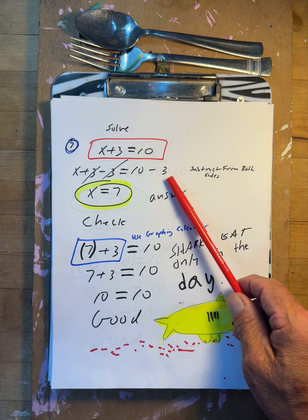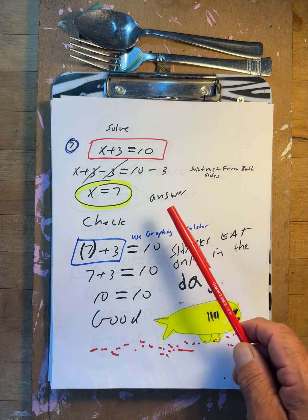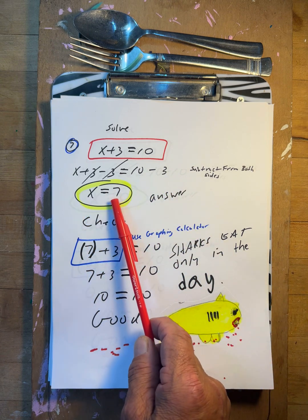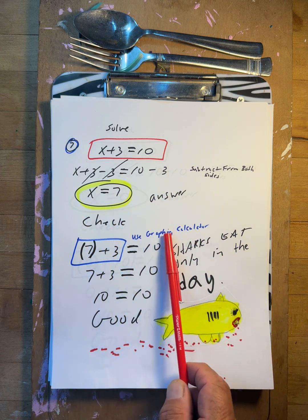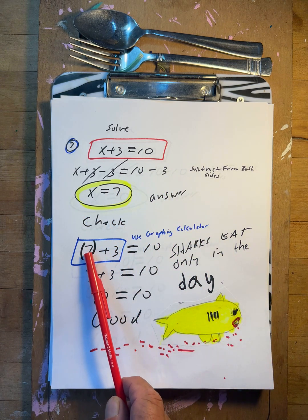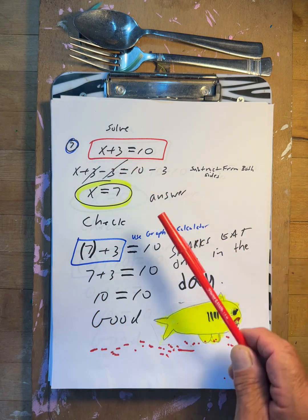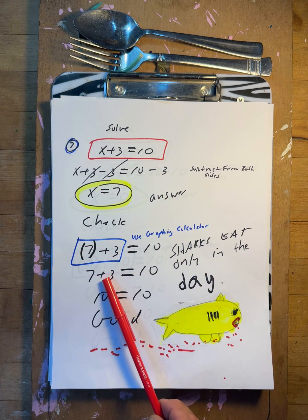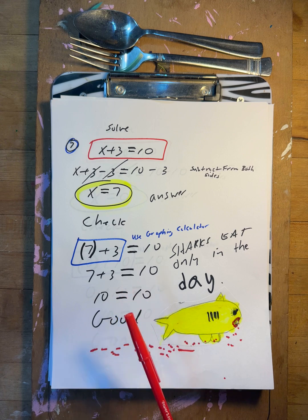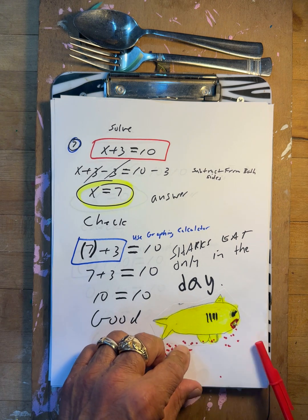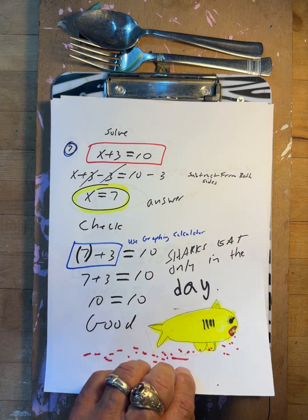x plus three equals ten. Minus three, minus three on both sides. So x equals seven. Does that work? Put it in: seven plus three — take the parentheses off — ten equals ten. Yes, that works.